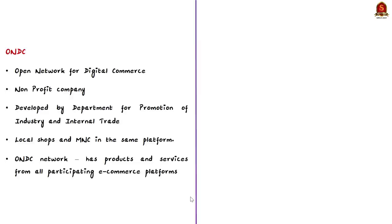ONDC is Open Network for Digital Commerce. Currently, how do you shop online? You log in to your Amazon or Flipkart account, look for the product, and place the order. This present system is disadvantageous for us as buyers and is not much beneficial for small sellers either. As buyers, when we decide to buy something online, we get into an e-commerce site and place the order. We do not check the price of the same product on multiple platforms.